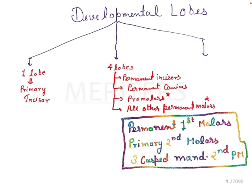This is very important — they will generally ask about five-lobed teeth in the exam. So remember: five lobes give rise to five teeth. What are those five teeth? We can see them in this particular table.